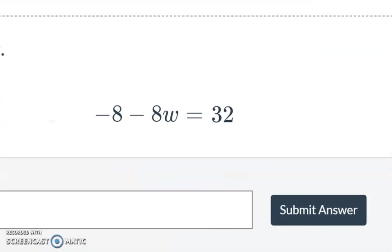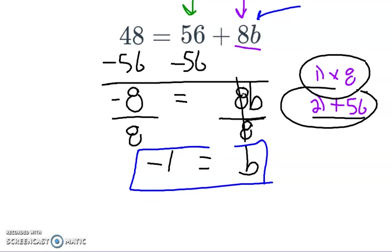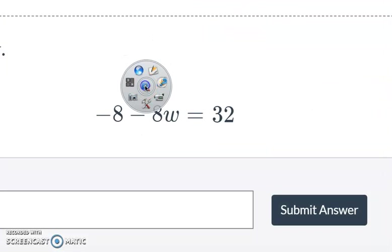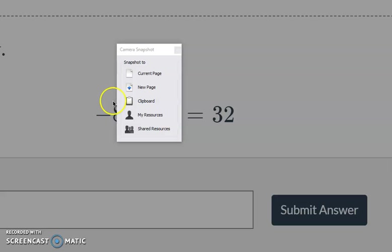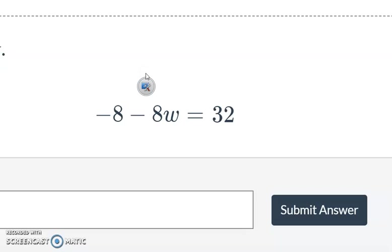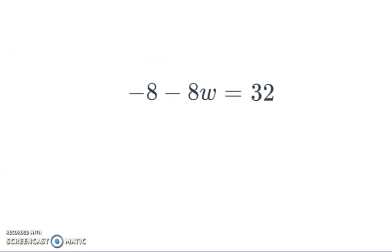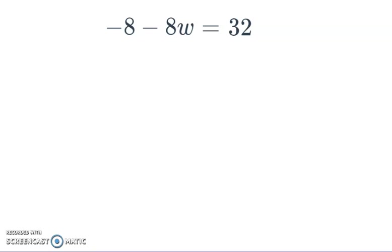And we'll make this thing bigger, make a new page, copy it. And here I am on this new page. And now I'm getting W by itself. So when it's all said and done, I want W on one side of the equal sign and everything else gone.